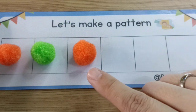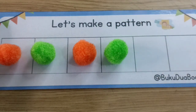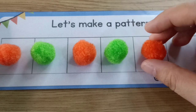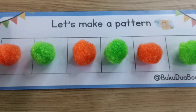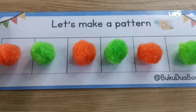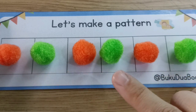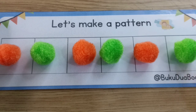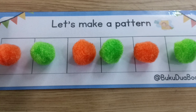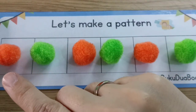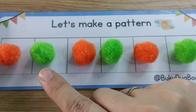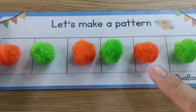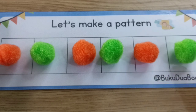After orange, green. After green, orange. Back to orange again. And after orange is? Green. Yes! Can you make your own pattern? Orange, green, orange, green, orange and green. Now it's your turn, children. If you are done, let's check the pattern from the left. What color is it? Orange, green, orange, green, orange, green. That's good.